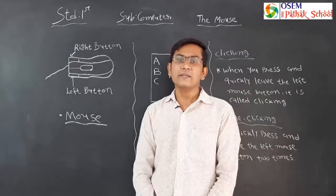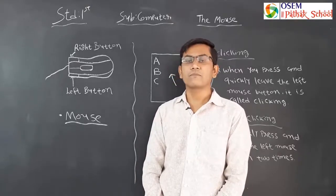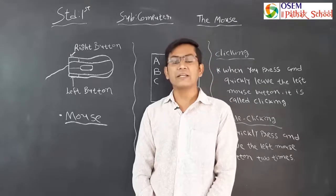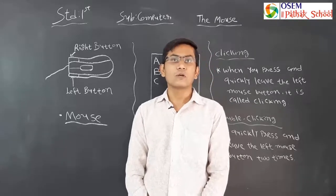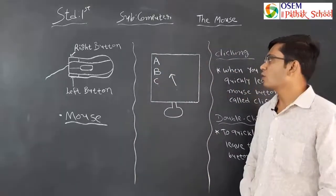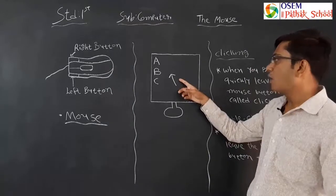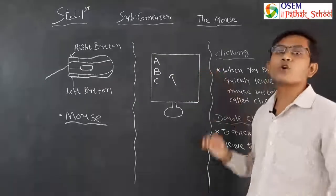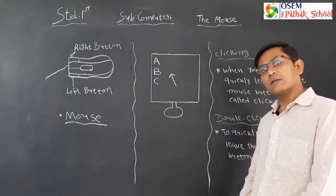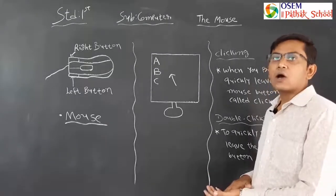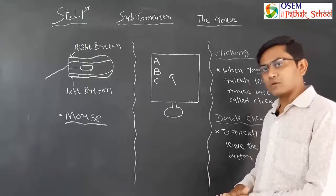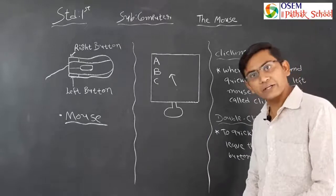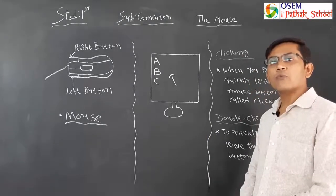When you use the mouse, the small arrow on the monitor screen will also move. The mouse is kept on a mouse pad, and when you move the mouse on the mouse pad, the arrow on the monitor screen will also move accordingly. This arrow is known as the mouse pointer.